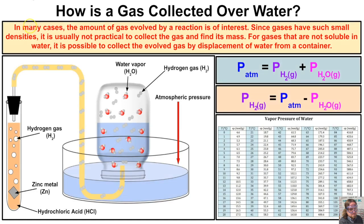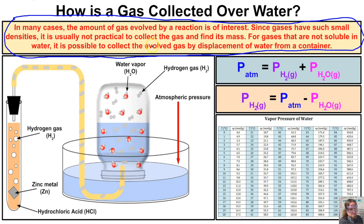In many cases the amount of gas evolved during a chemical reaction is of interest, and since gases have such a small density it is usually not practical to collect the gas and find its mass. For gases that are not soluble in water, it is possible to collect the gas that's evolved by displacement of water from a container.